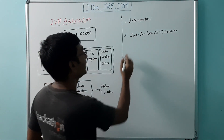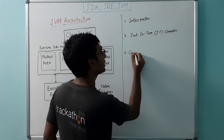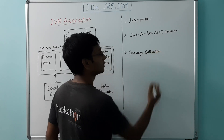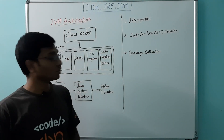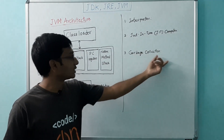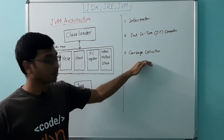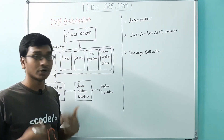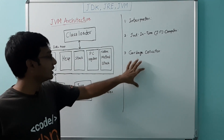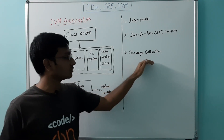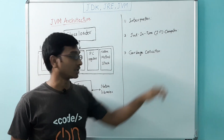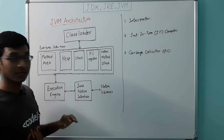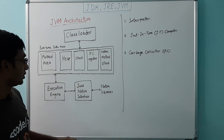Then comes the garbage collector. Java performs memory management using garbage collection. It is a process of looking into the heap memory and identifying objects which are in use and which are not, and destroying the unused objects. This is usually represented as GC. This is what happens in the execution engine.